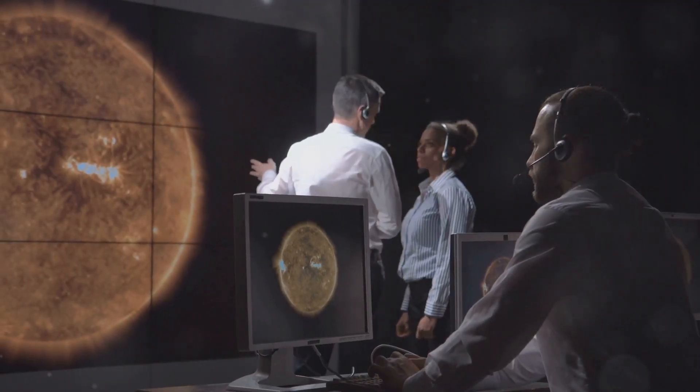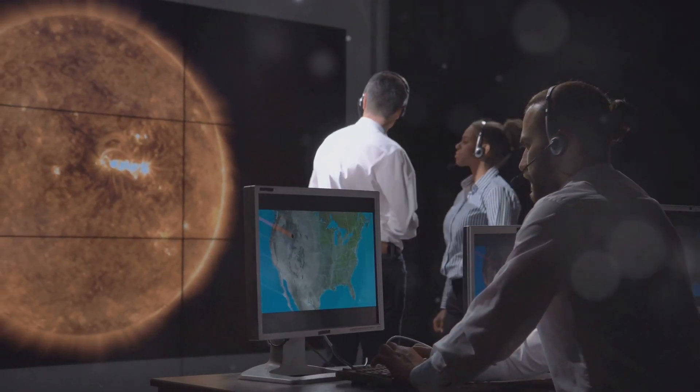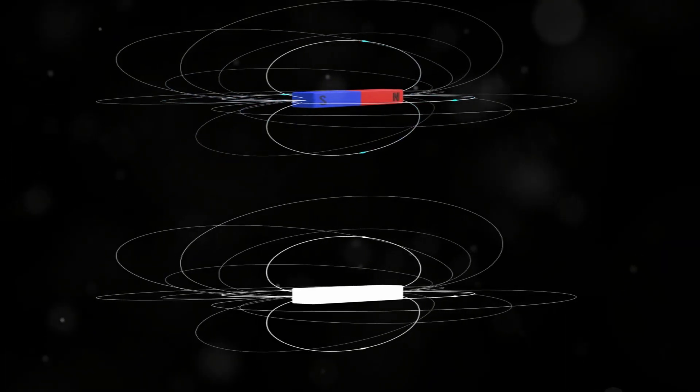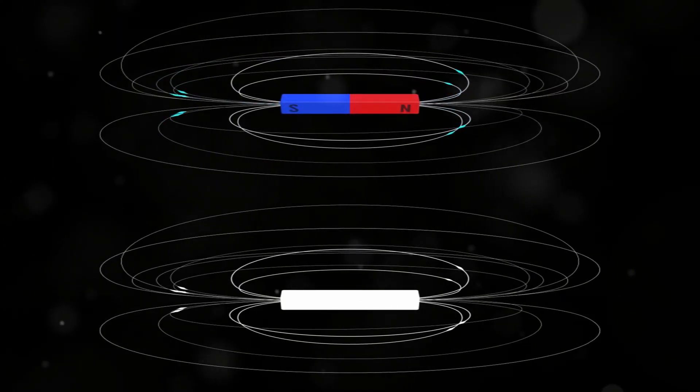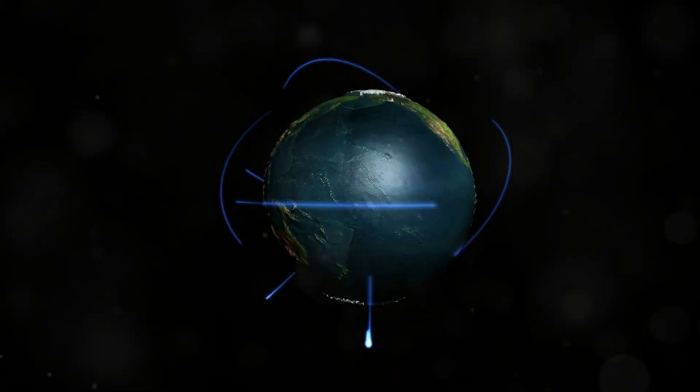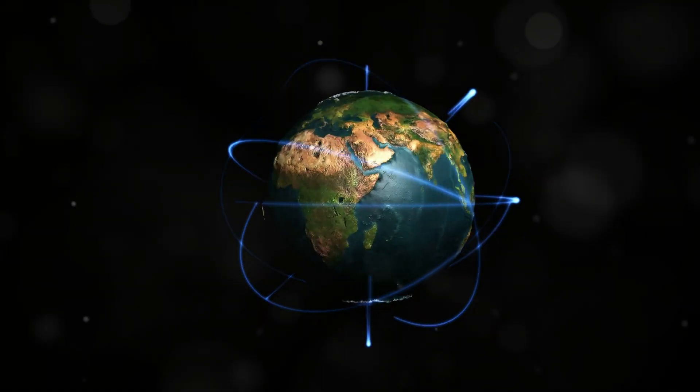More recent observations, including a study published in 2020, revealed that the SAA appears to be splitting into two separate cells, each representing a separate center of magnetic weakness. What's driving this transformation? That's still a mystery.